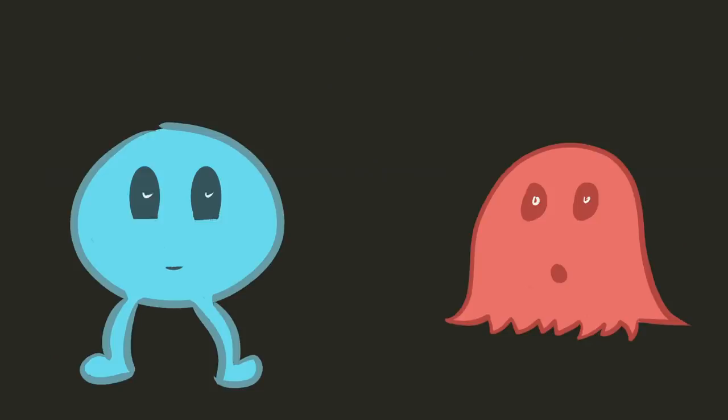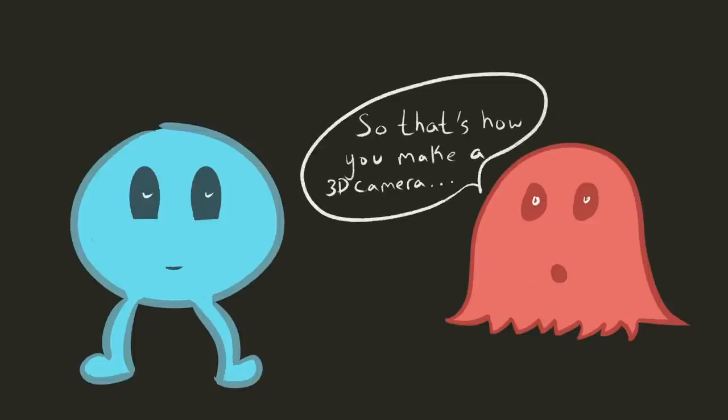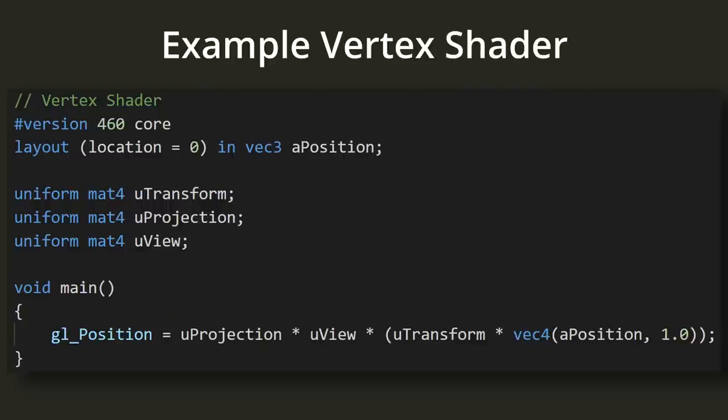Now, how do we transform our vertices sent to our vertex shader? We can write a simple vertex shader program. This code is written in GLSL — Graphics Library Shading Language. This language is based on a C-style syntax and it is the language used to write OpenGL shaders. Let's walk through it line by line.